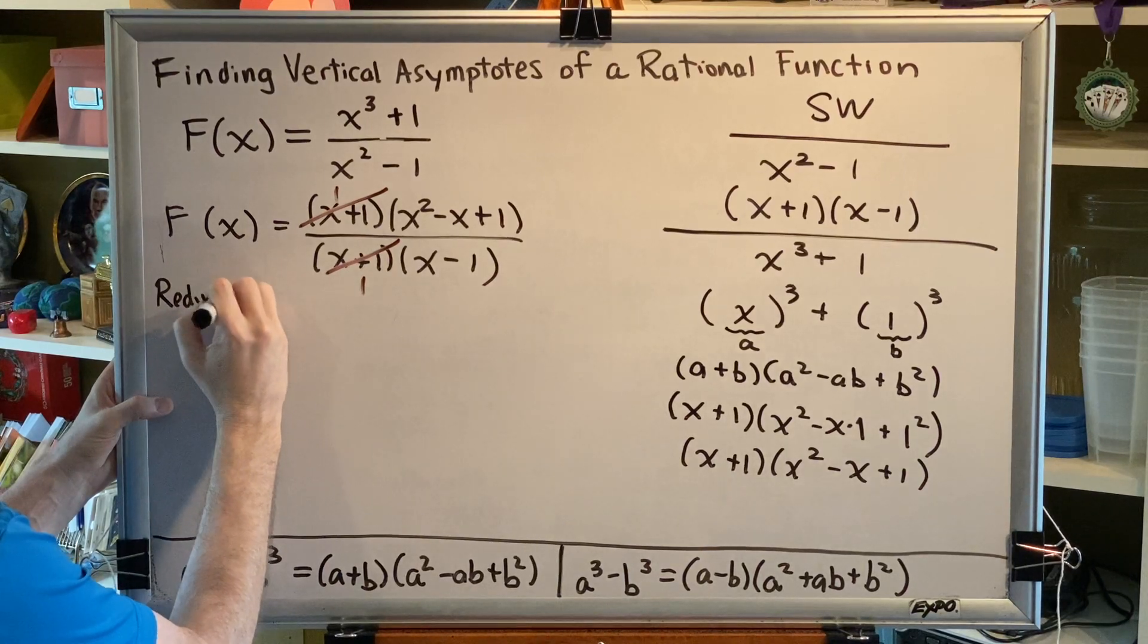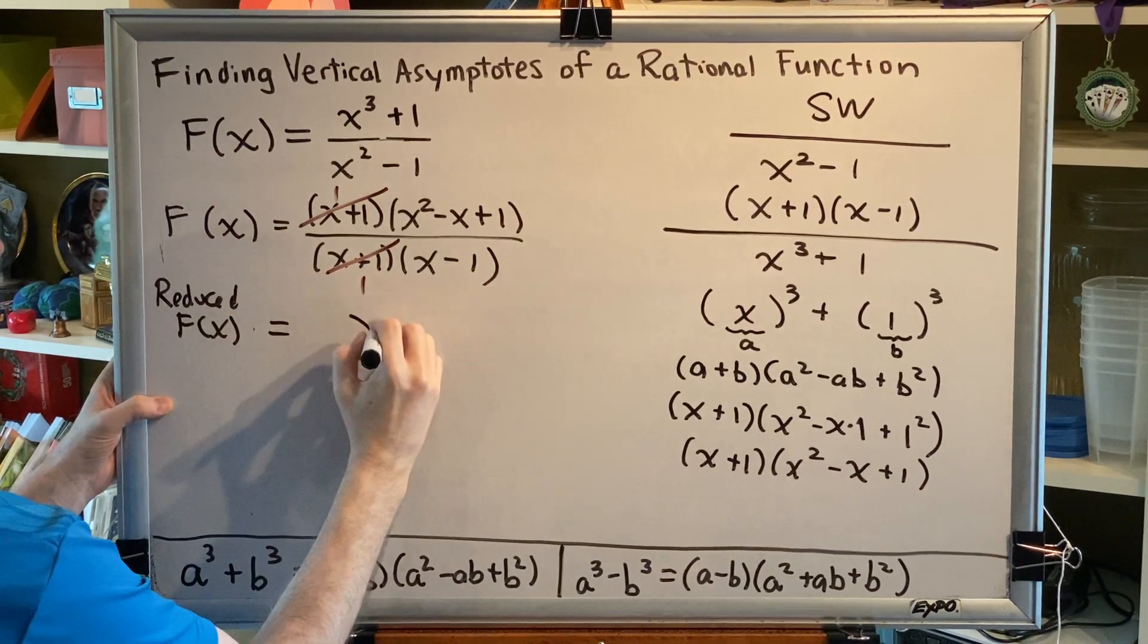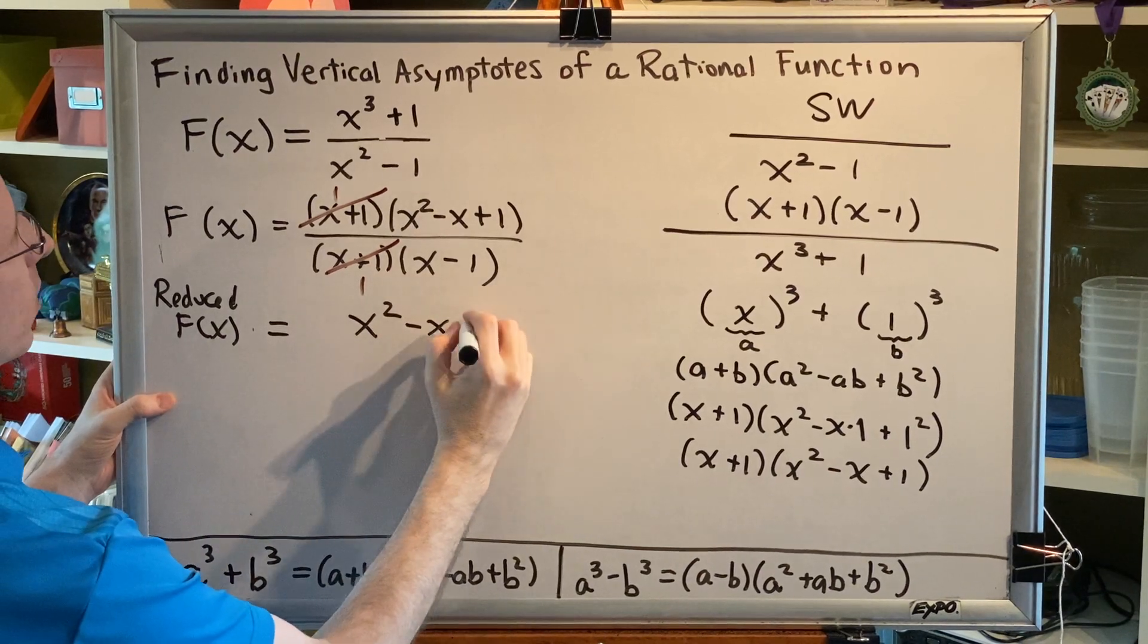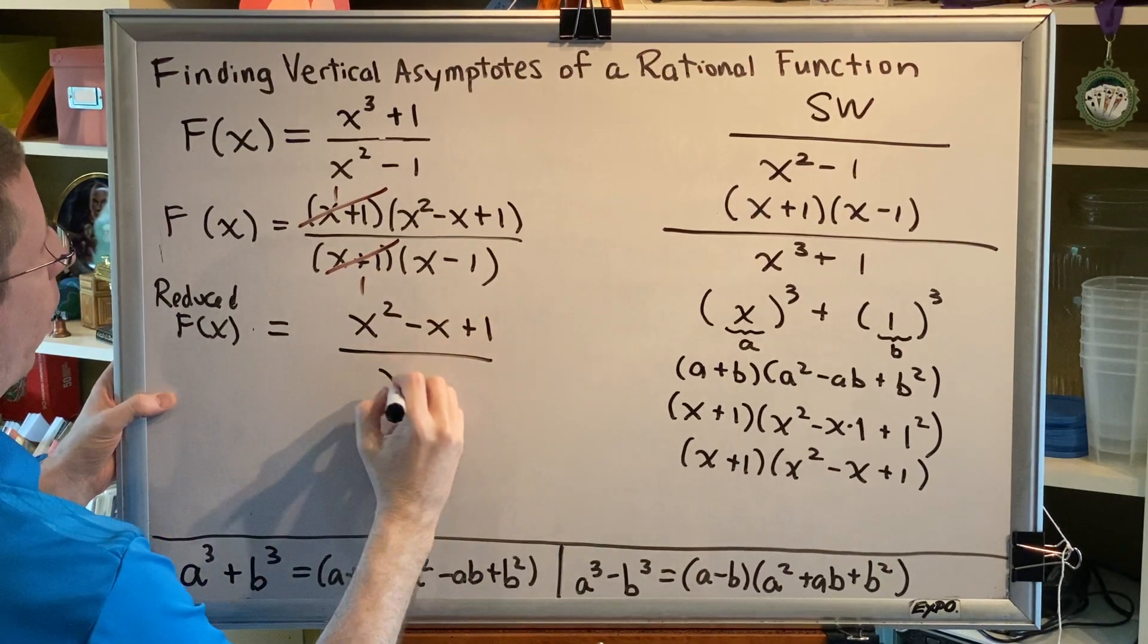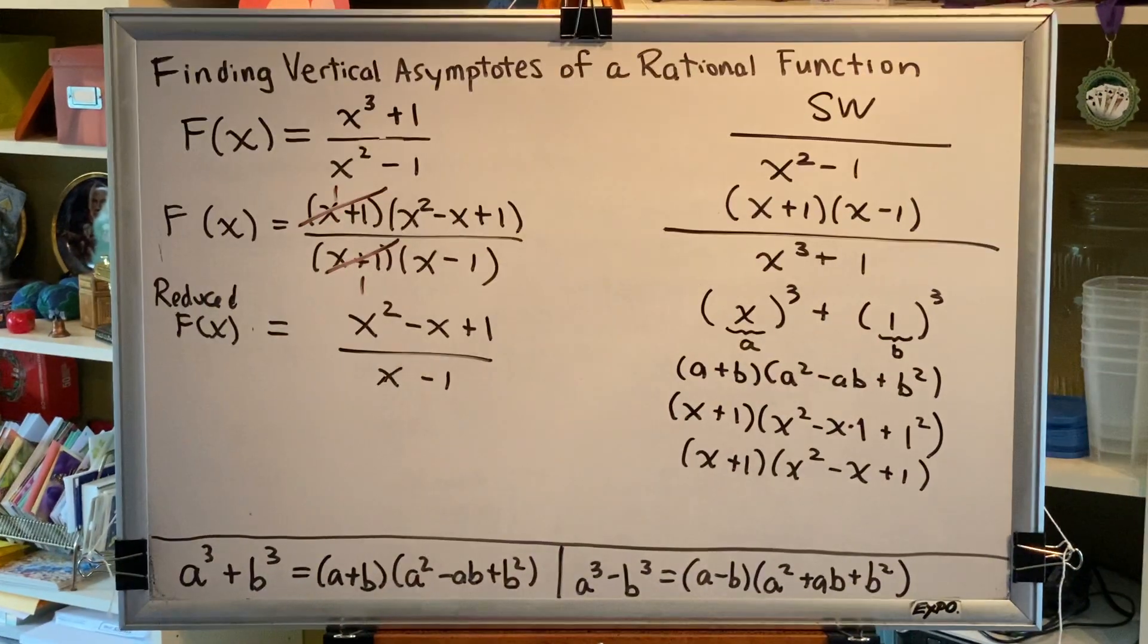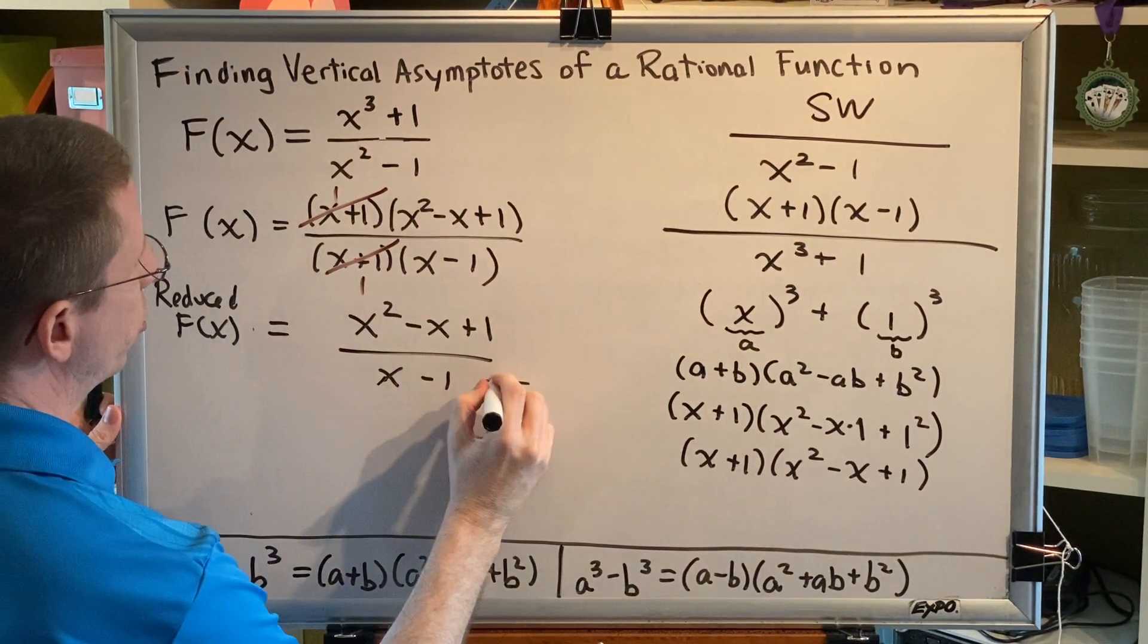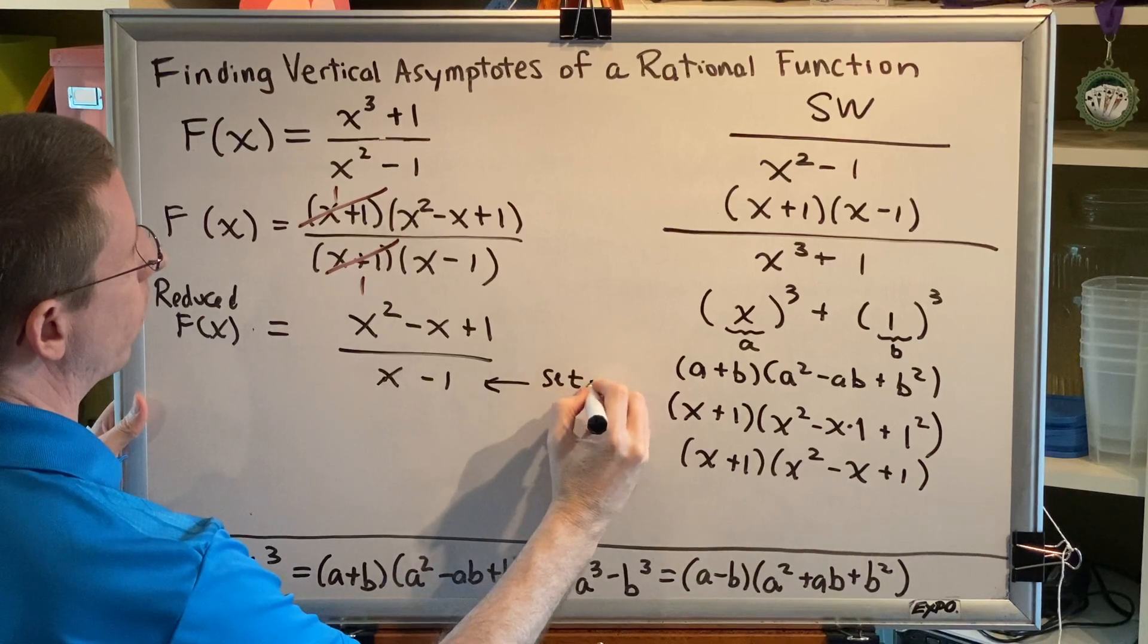So, our reduced function f of x is equal to x squared minus x plus 1 over x minus 1. Okay, so now we're ready for the final step of this problem, which is to set our denominator equal to 0. Our reduced denominator has to be set equal to 0.